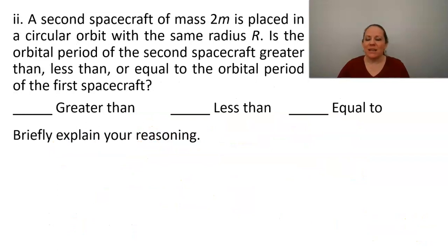And in part two, a second spacecraft of mass 2m is placed in a circular orbit with the same radius r. Is the orbital period of the second spacecraft greater than, less than, or equal to the orbital period of the first spacecraft? Briefly explain your reasoning. So here is my hot tip. Briefly explain your reasoning first and then go back and select your answer. And that's because you have to think this through in order to select an answer.